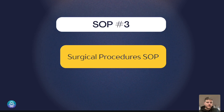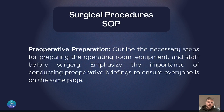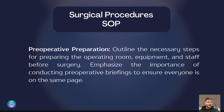SOP number three: surgical procedures SOP. When someone comes in for a surgery, this is a very big deal and you want the process documented from beginning to end for every team member in every role. Some things to include are a pre-operative preparation checklist — outlining necessary steps for preparing the operating room, equipment, and staff, detailing who's involved, and emphasizing the importance of conducting pre-operative briefings so that everyone is on the same page.